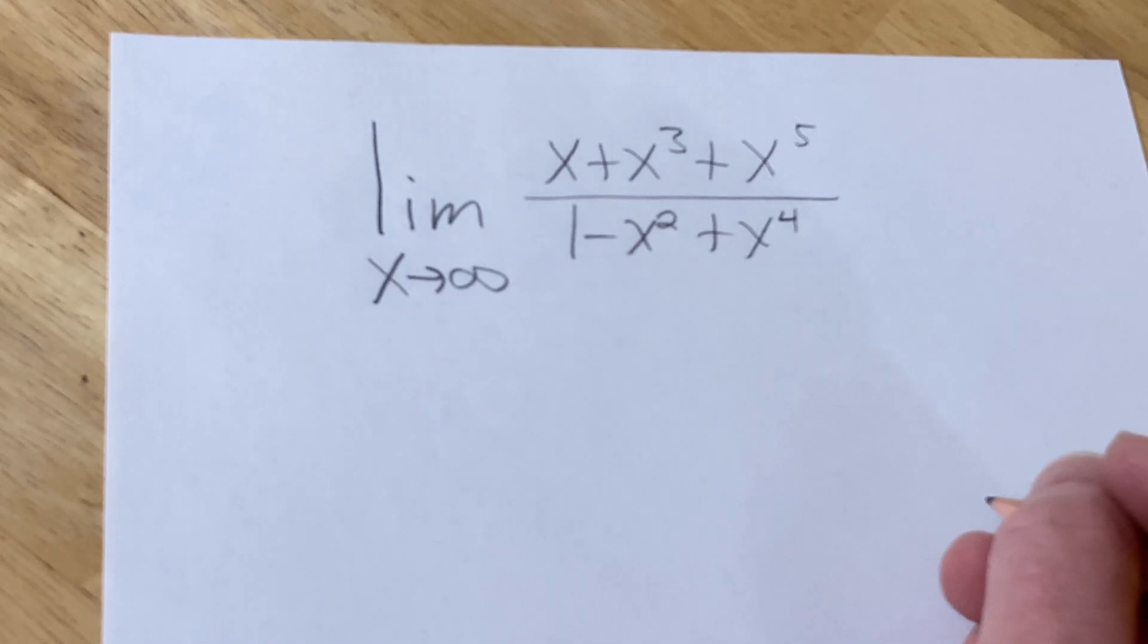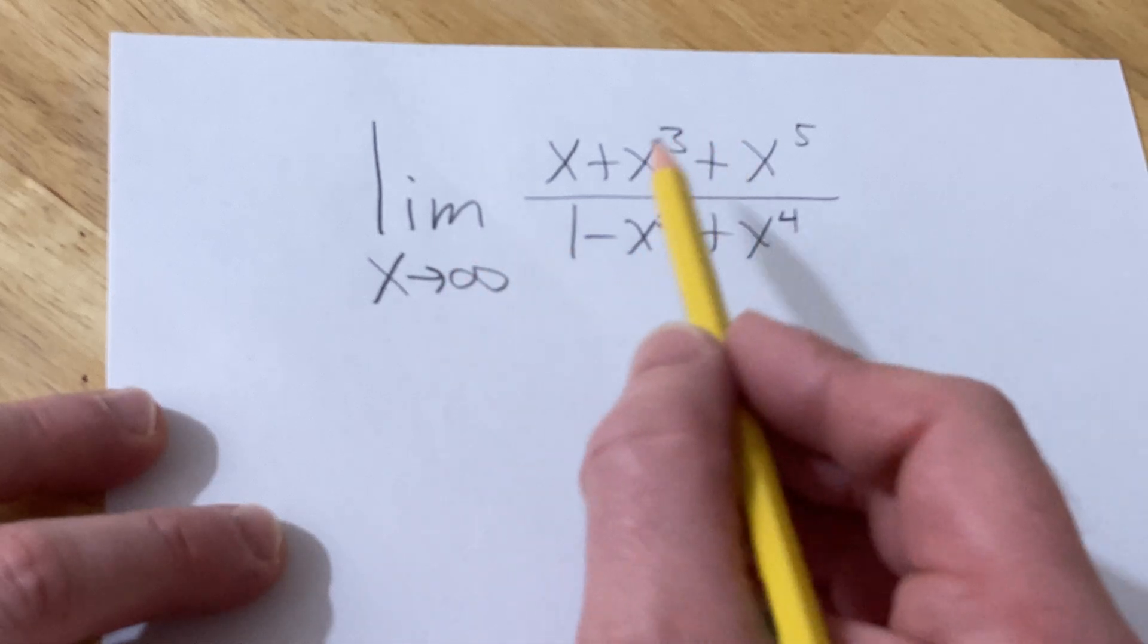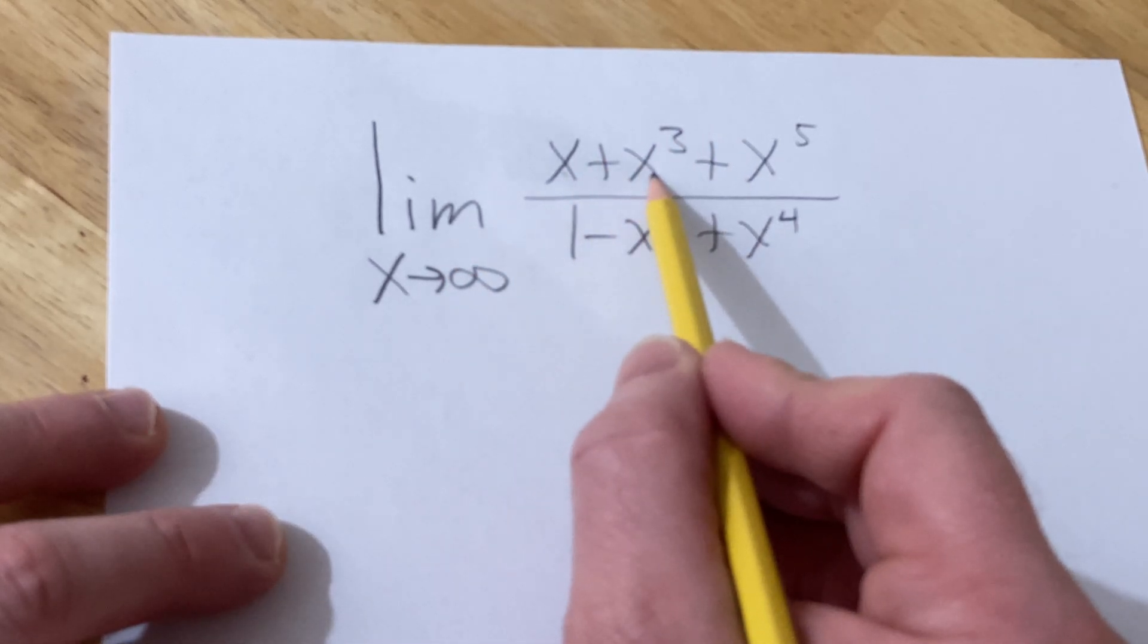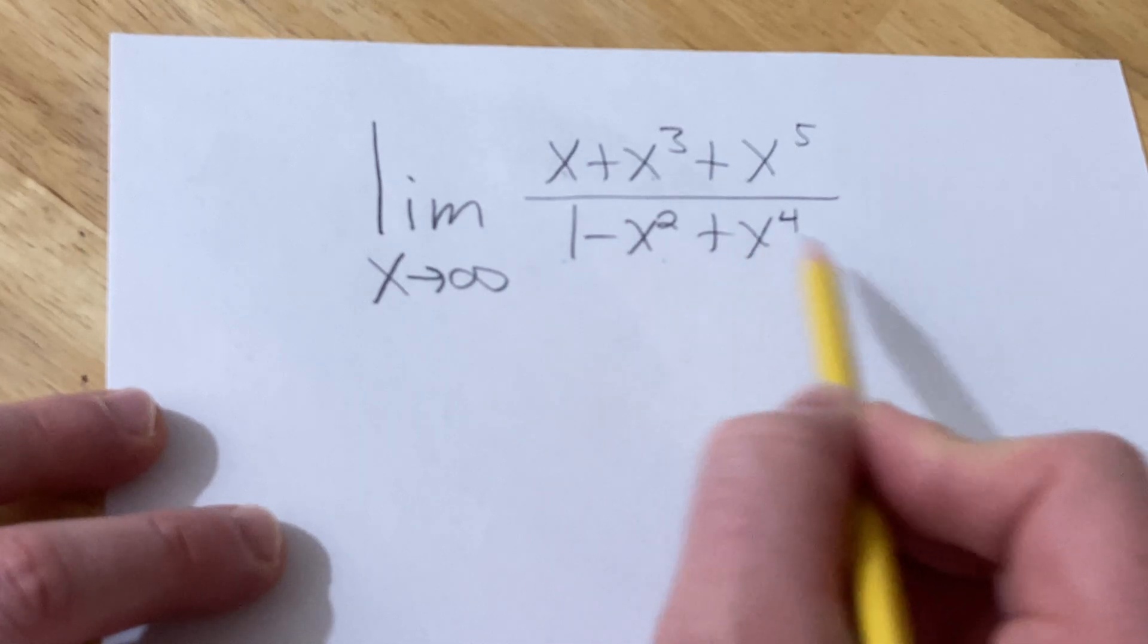Hello. In this video, we're going to find this limit. We have the limit as x approaches infinity of x plus x cubed plus x to the fifth over 1 minus x squared plus x to the fourth.